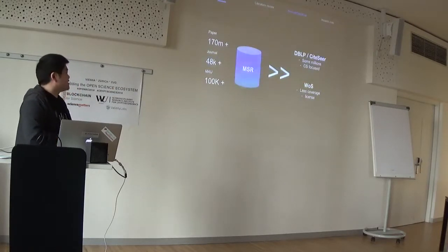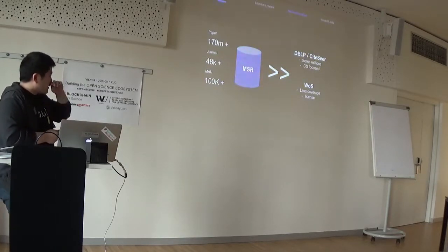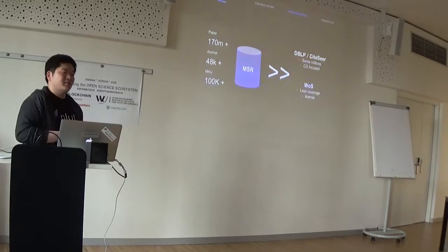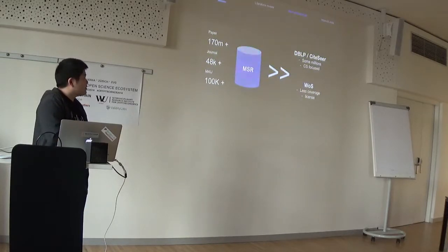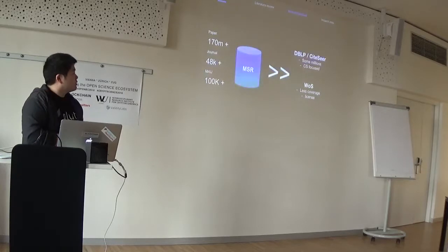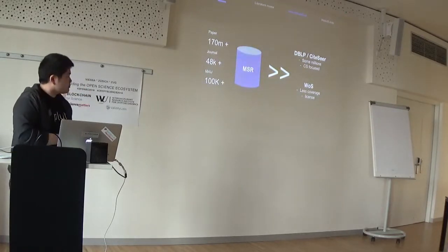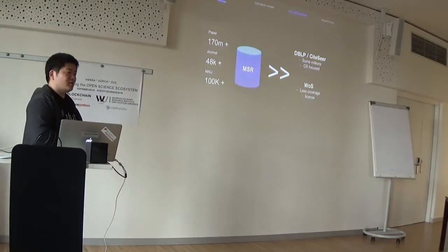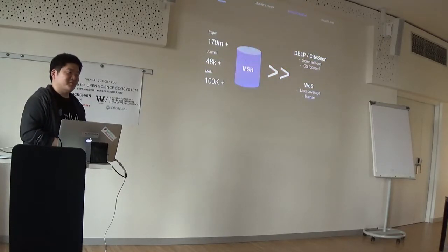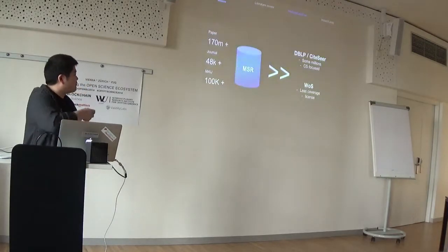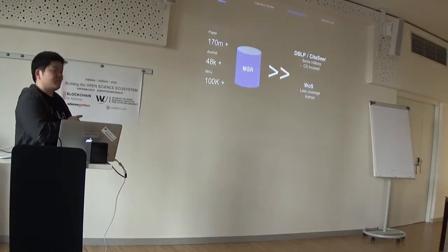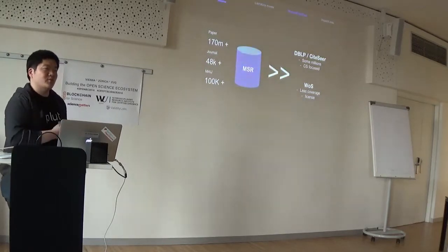It covers more than 48,000 journals. Prior studies had often been analyzing on DBLP or CiteSeer database or sometimes Web of Science, but those have their limitations in that they're more focused on computer science field and have much less coverage of papers. Speaking of Web of Science, we're an institutional research institute, so we don't have any access to it. The dataset we're using is one of the biggest databases for knowledge graphs.